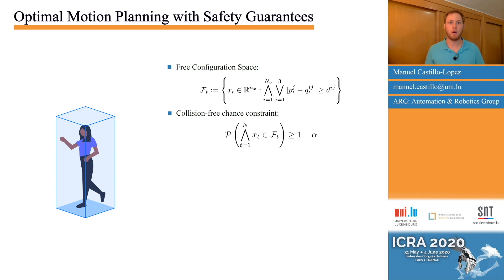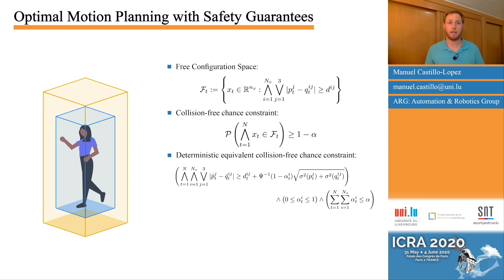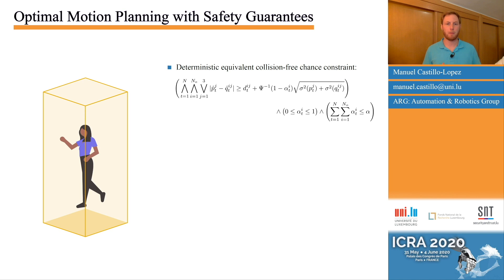Since each of the faces represent a linear constraint, we can obtain the deterministic equivalent bounding box, as represented in orange. By now, we have a disjunctive constraint that ensures that the probability of collision remains below the risk level alpha.